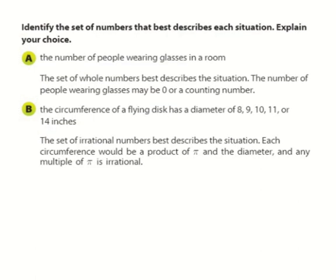Then take a look. The number of people wearing glasses in a room. This has to be a set of whole numbers. If you think about it, we don't say, we don't count people as decimals and or fractions. We don't say, oh yeah, this class has 23.3 students in it. So the set of whole numbers best describes the situation. The number of people wearing glasses may be zero or any counting number, which means we also don't count people as negatives. It's either zero or one. It's not anything in between.